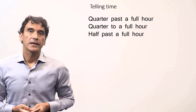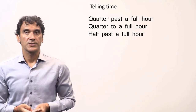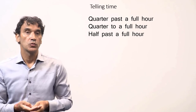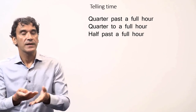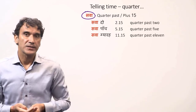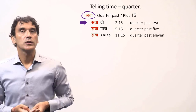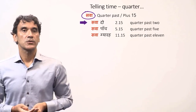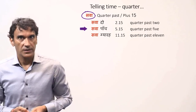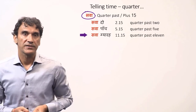Just like other languages, Hindi also has common time expressions such as quarter past, quarter to, and half past a full hour. The word sava is used to express quarter past an hour: sava do — quarter past two, sava paanch — quarter past five, sava gyara — quarter past eleven.